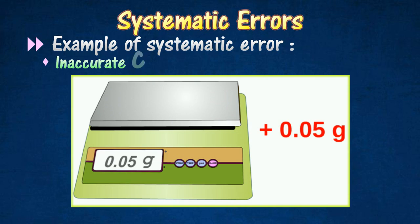First one is inaccurate calibration, which occurs for example if the electronic balance has been calibrated 0.05 gram too high. Then all the measurements of mass will give readings in excess of 0.05 gram.